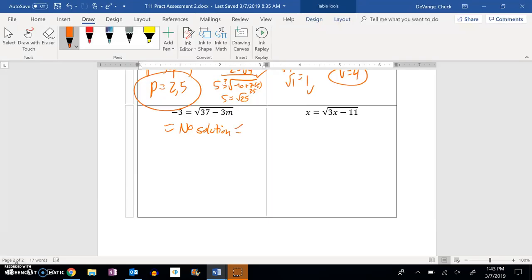So if you see it right there, you can stop right there. If you don't see it, you would have squared both sides and you would have ended up with 9 equals 37 minus 3m. Subtract 37 from both sides. So 9 minus 37.